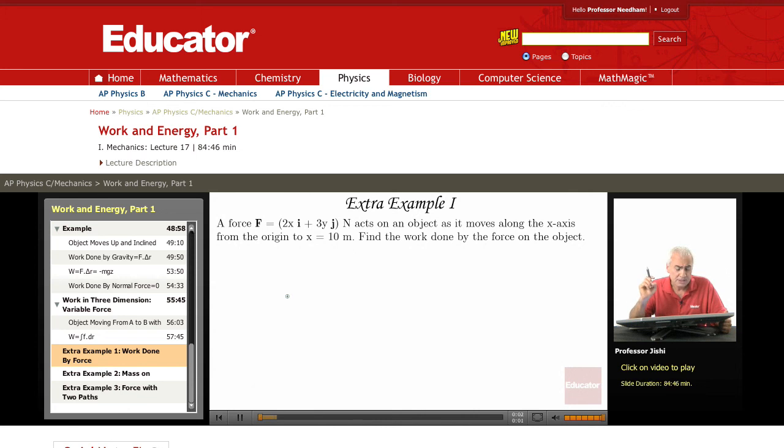Hi, I will discuss now three extra examples dealing with work. The first one, we have a force 2xi-hat plus 3yj-hat newtons. It acts on an object as it moves along the x-axis. So the object moves from the origin to x equals 10.